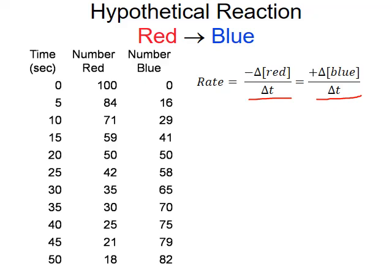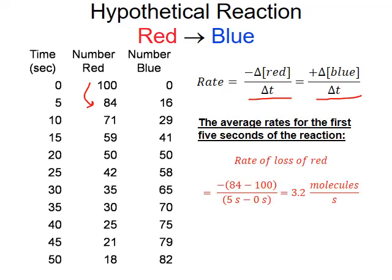Let's calculate the average rate of loss during the first five seconds. The red molecule count drops from 100 to 84. We always take a difference as final minus initial, so that's 84 minus 100, which gives us negative 16. Because we're dealing with a reactant, we apply the negative to give us a positive value overall. Dividing by the time interval of 5 minus 0 seconds, we get 16 divided by 5, which gives a rate of loss of red of 3.2 molecules per second.